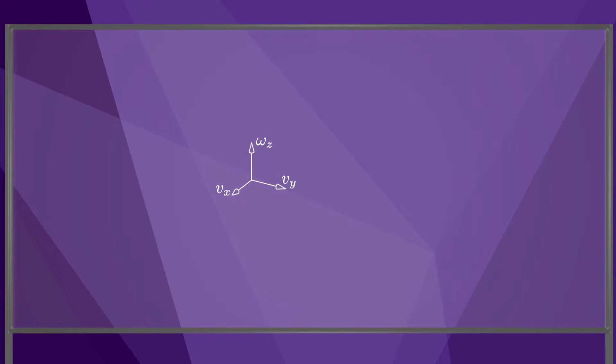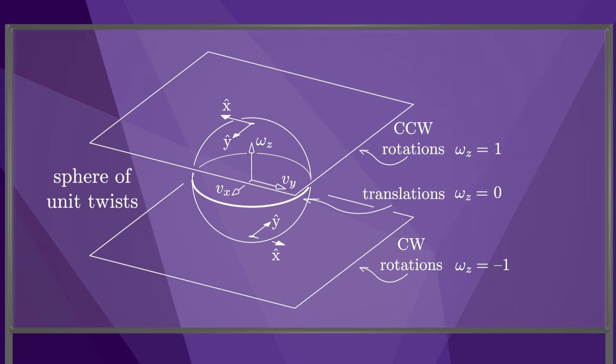This is the three-dimensional space of twists of a planar rigid body, and the sphere of unit twists. We draw planes equipped with coordinate frames at omega z equals one and omega z equals minus one.